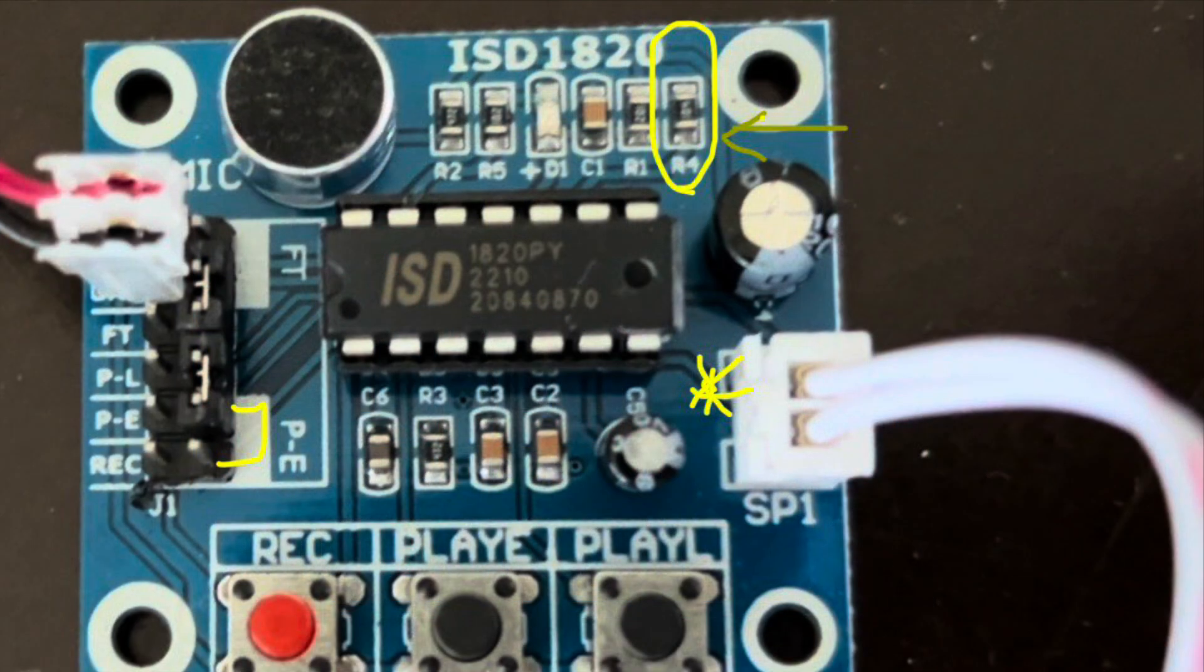First, I wanted to make a correction to the previous video. The spot where the audio output is was an error in the previous video. Where the asterisk is located is the speaker negative terminal. Instead, it's the lower pin that is the audio output, and that's where it should be hooked up.